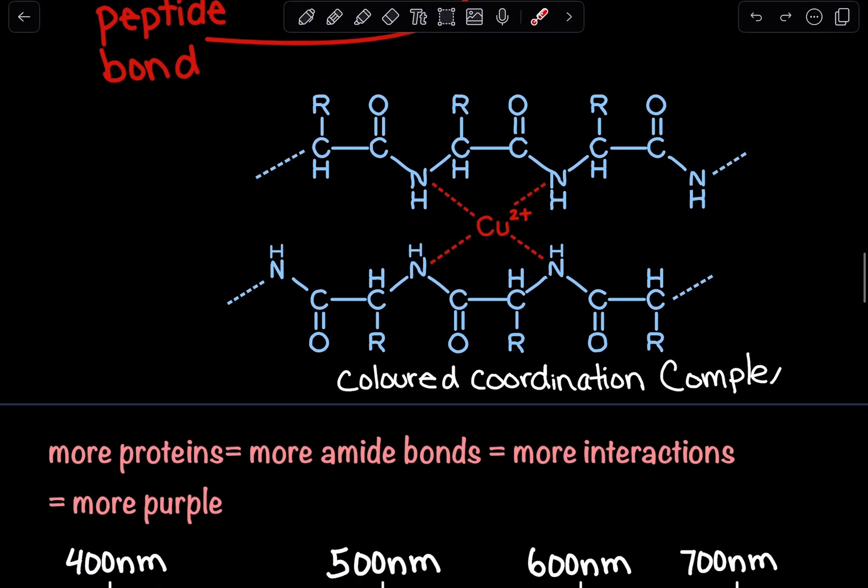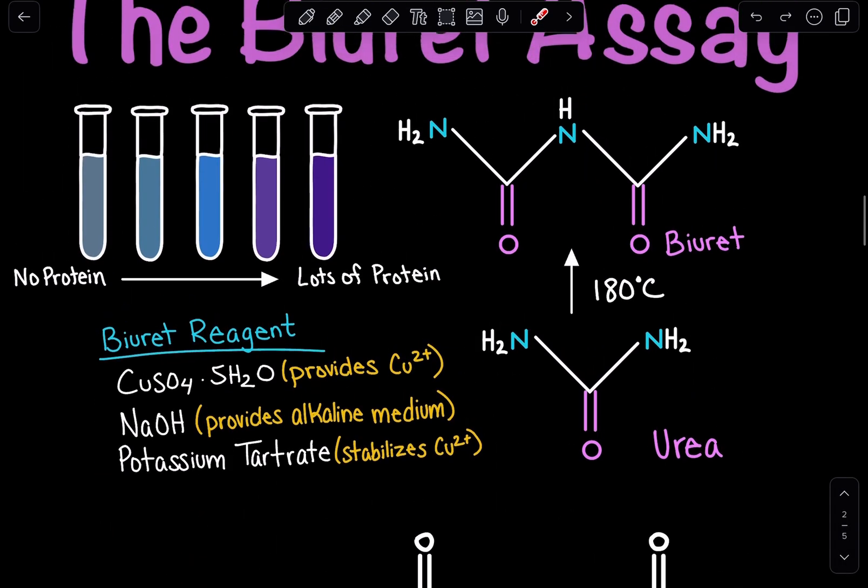To get reliable results, we need lots of proteins. The more proteins we have, the better: more amide bonds, more interactions, more purple, higher absorbance value, more accurate Biuret assay.